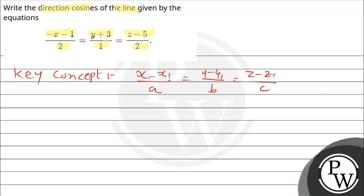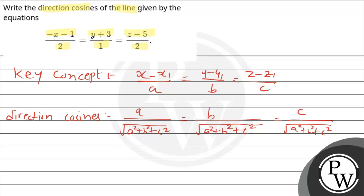If the line's equation is given in this form, then the corresponding direction cosines values are: a upon square root of a² plus b² plus c², equals b upon square root of a² plus b² plus c², equals c upon square root of a² plus b² plus c². Note that these should have plus or minus signs.